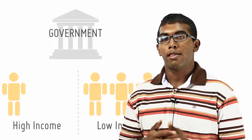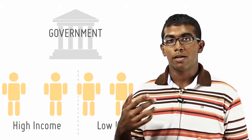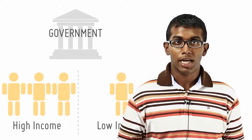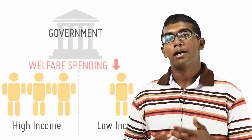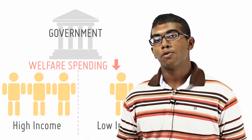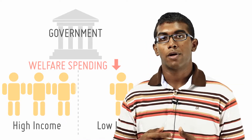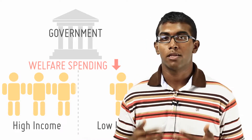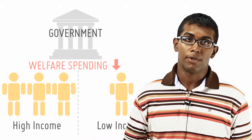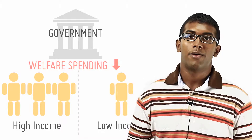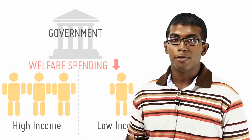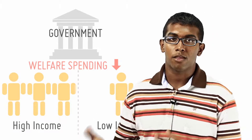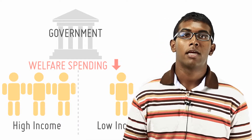Also, it affects the government because as more and more people get education, they don't have to spend on them. They don't have to undergo what you call welfare spending because there are less low-income people out there. So these are all spillover benefits experienced by other parties, third parties.